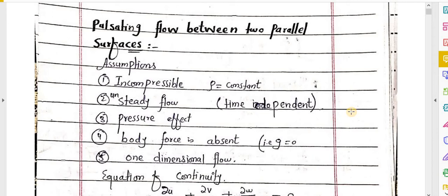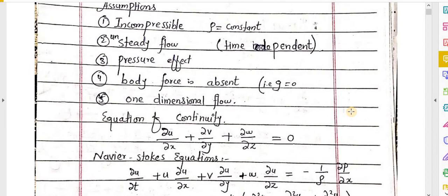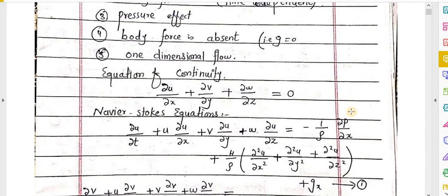The fourth assumption is that body force is absent, meaning g will be equal to zero. The fifth assumption is that the flow is one-dimensional — either in the x-direction, y-direction, or z-direction.